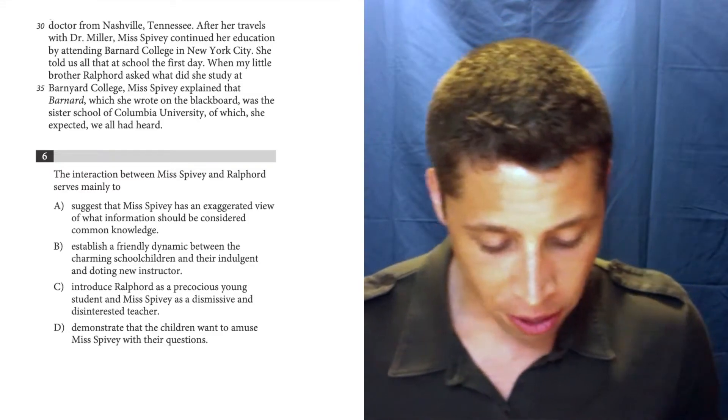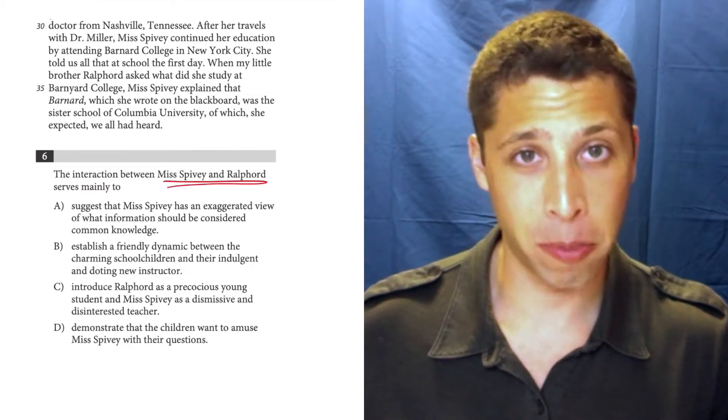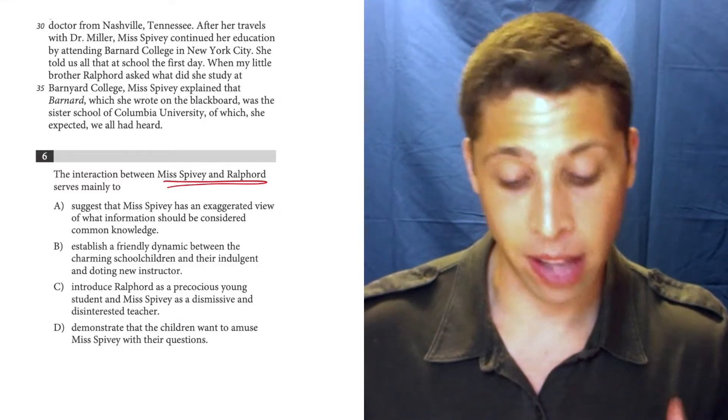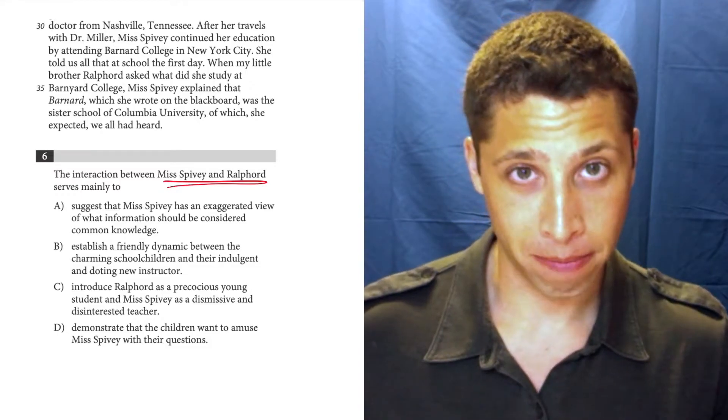But here's a good example of just like the standard way is going to help you too. Just skim for the key idea. They're very clear about what they want, this interaction between Ms. Spivey and Ralford, and that happens in around line 30 to 38. And what are they talking about, okay?